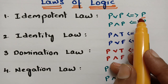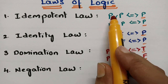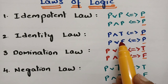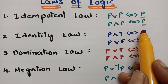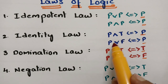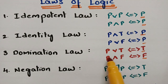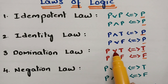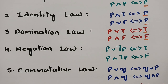To remember: for idempotent law, a squared equals a, so p OR p equals p and p AND p equals p. For identity law, like looking in a mirror, p AND true or p OR false equals p. For domination law, which is the reciprocal of identity, p OR true and p AND false give true and false respectively.